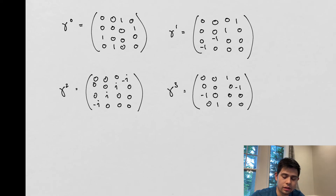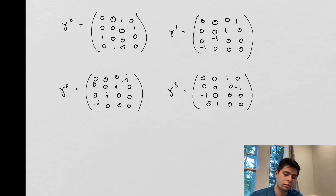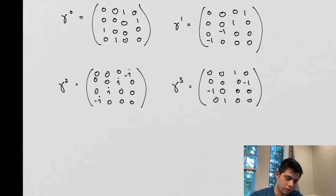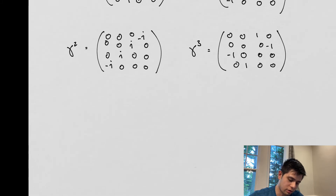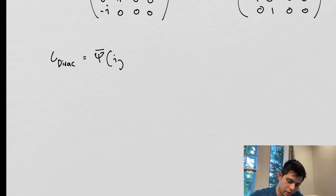These matrices obey unitarity — we'll go over that later when we review quantum mechanics, I believe in chapter seven or eight. These are our gamma matrices. We could, for example, write down our Dirac Lagrangian — say L_Dirac — as phi times the imaginary number i, and we could select a specific value, say m equals one.